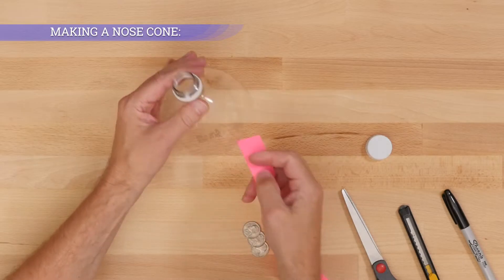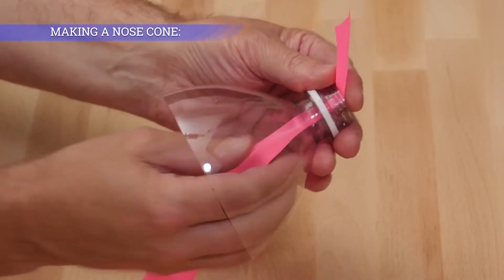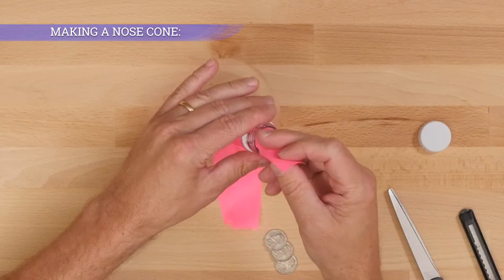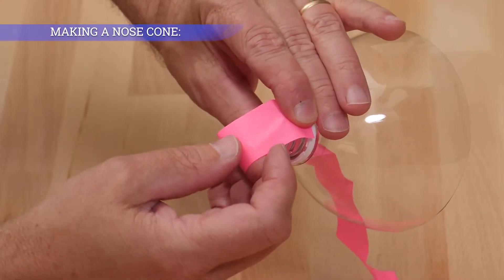Thread flagging tape through the center of the nose cone. Leave a little excess tape on each side.